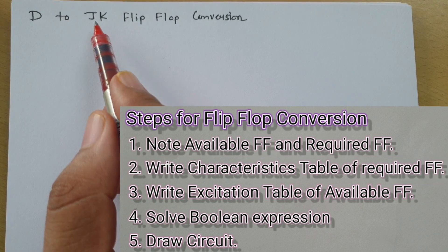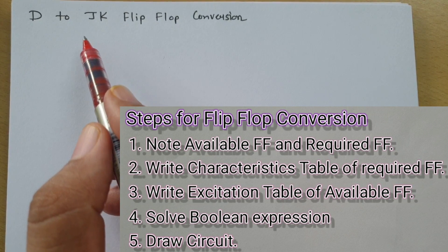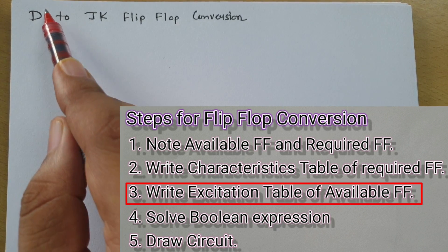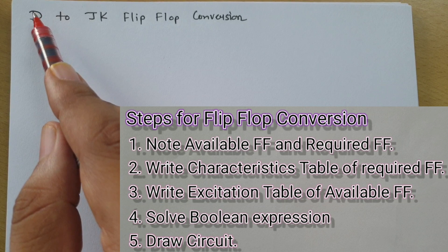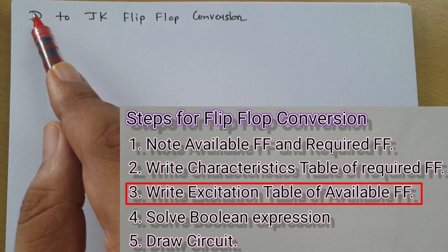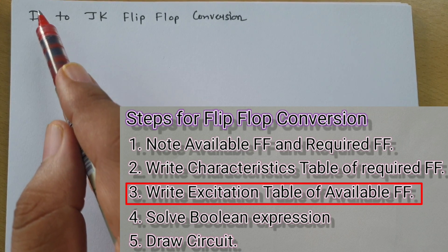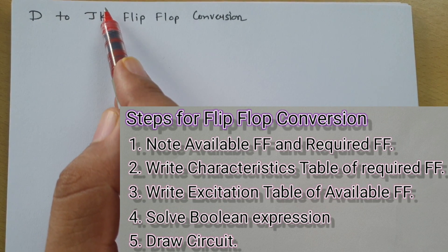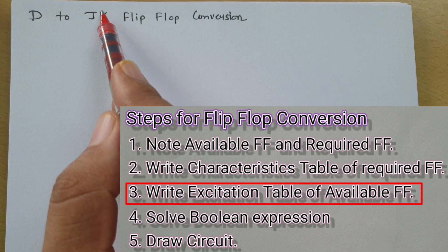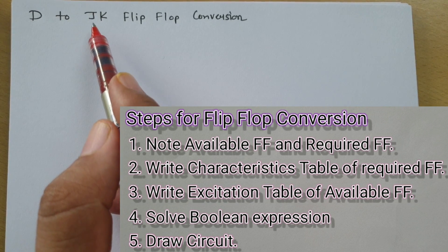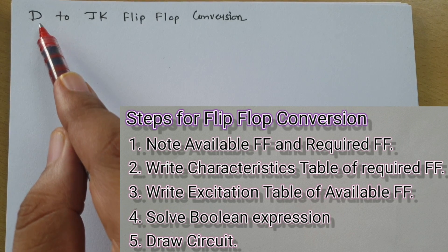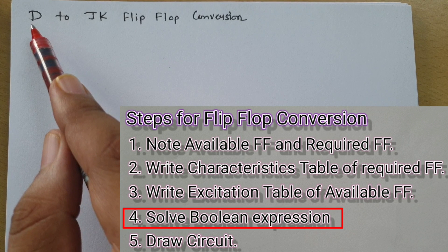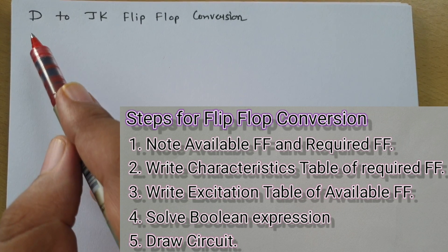The third step is to write the excitation table for the available flip-flop, which is the D flip-flop. We will then place that excitation table into the characteristic table of the JK flip-flop, solve the K-map of that table, and obtain a boolean expression. Once we have the boolean expression, we can easily make a circuit for the flip-flop conversion.